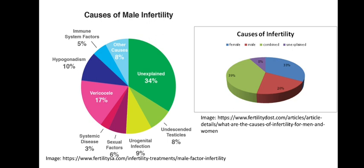Similarly in males, unexplained causes account for around 34%, undescended testicle occurs in some cases, urogenital infections may be a reason, sexual factors account for almost 6%, systemic diseases almost 3%, varicocele 17%, hypogonadism 10%, and immune system factors 5% where antibodies are produced that may kill spermatozoa. On average, infertility in couples breaks down as: 33% female alone, 20% male alone, 39% both male and female, and around 8% unexplained.